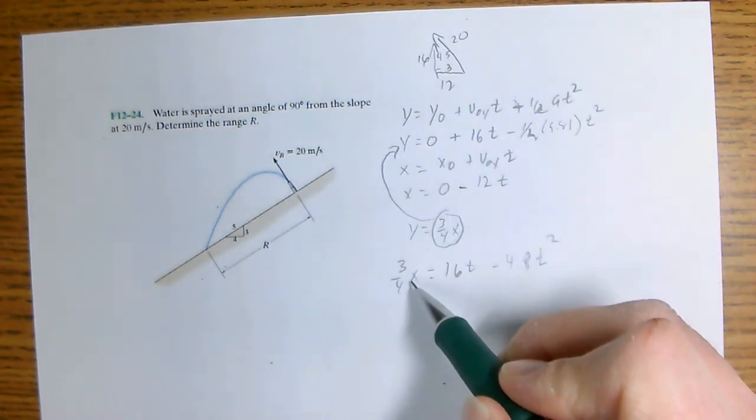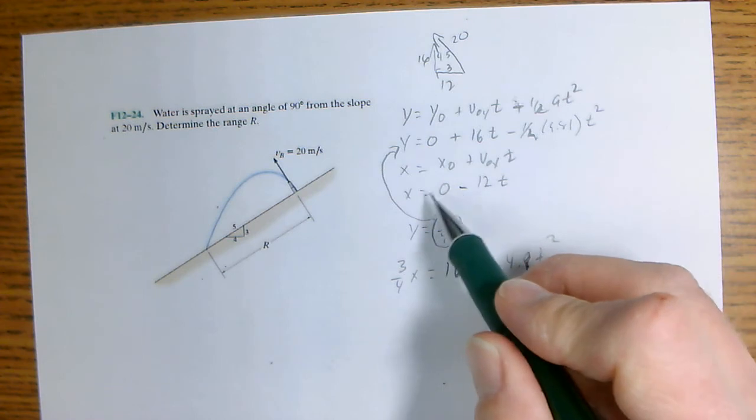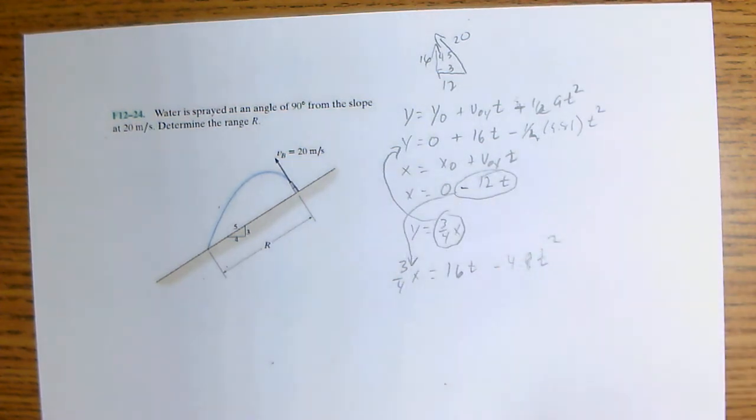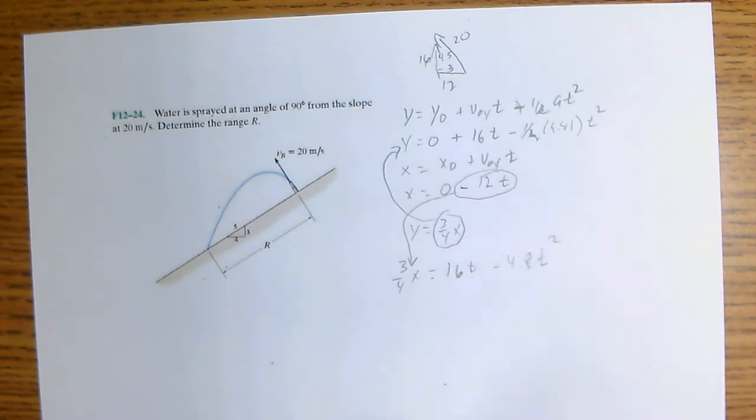But X we'd rather have T. So here's X. So let's put X into there and then we'll have an equation based on T.